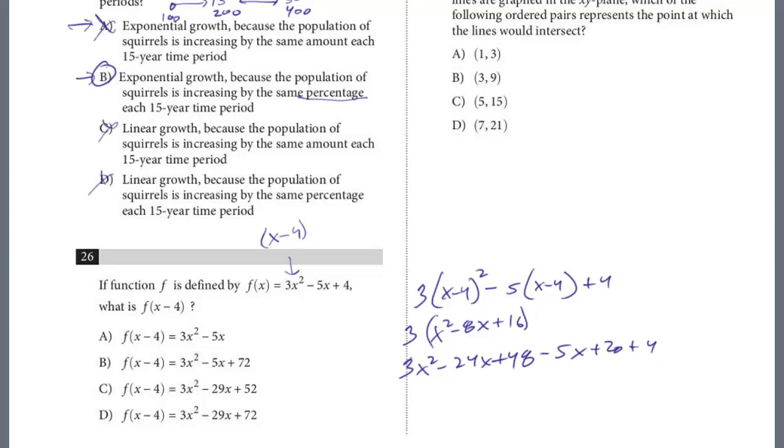And so now we just combine the like terms. And so here, this is the only x squared, so we have 3x squared. And we have a minus 24x, and a minus 5x, so it's going to be minus 29x, and then we have the numbers, 48 and 20, that is 68 plus 4 is 72. And that's our answer, choice D.